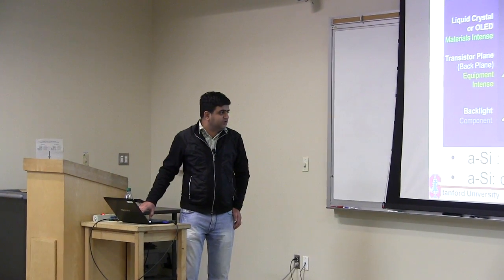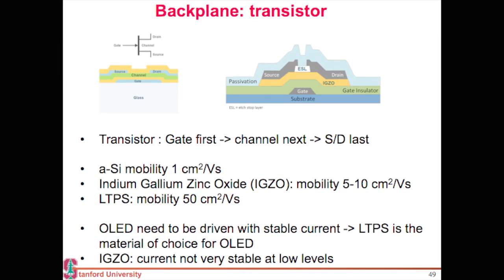This is how these backplane transistors look like. They are made in a way such that the gate is laid out first. So first you lay out the gate, then you deposit your channel. Your channel typically has been amorphous silicon. But now people are—and then you deposit your source and drain, and then etch them out and separate the source and drain. What people are trying to replace this with is this material called IGZO, or it's essentially a doped zinc oxide. People are trying to replace it with metal oxide or indium gallium zinc oxide or some version of zinc oxide.